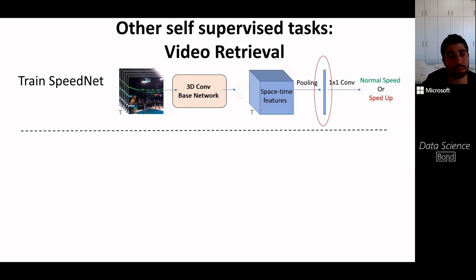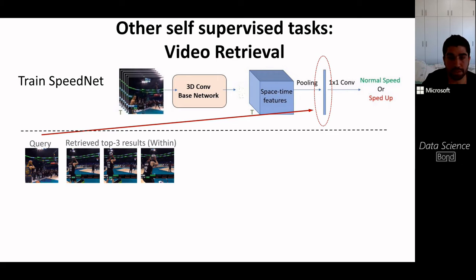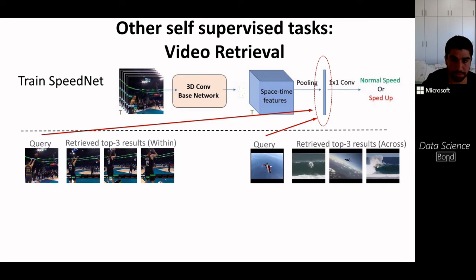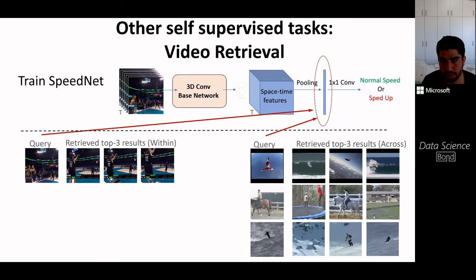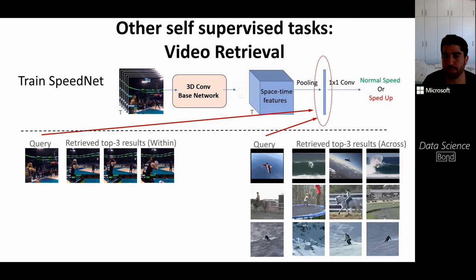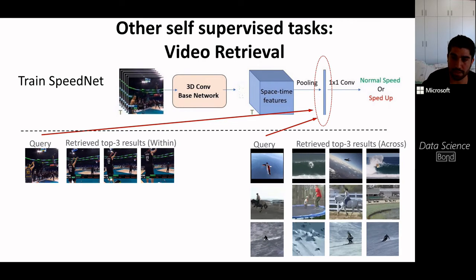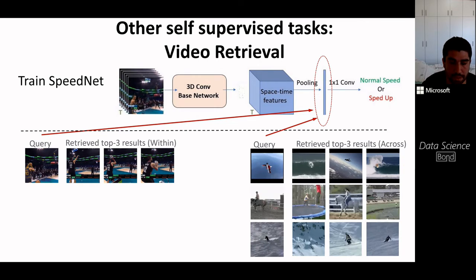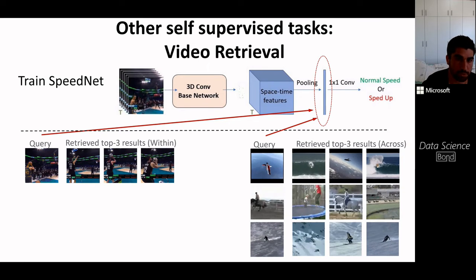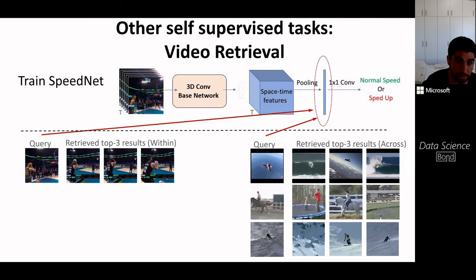We also used SpeedNet for video retrieval. We extracted SpeedNet embeddings after the pooling layer, and for a given query clip found the nearest neighbors in embedding space, either within the same video or across videos. Since SpeedNet was not trained specifically for action recognition, some neighbors are not of the same class but contain similar motion patterns — for example, a person free-falling has a similar motion pattern to a person surfing.